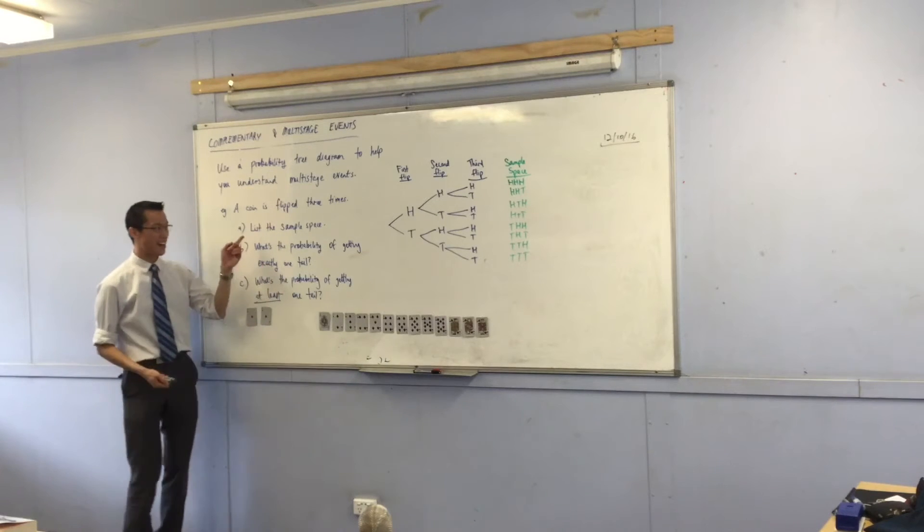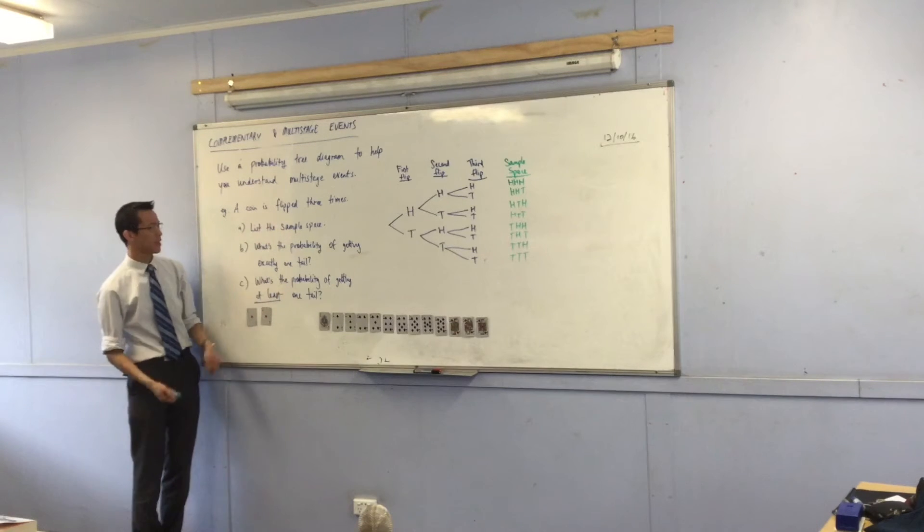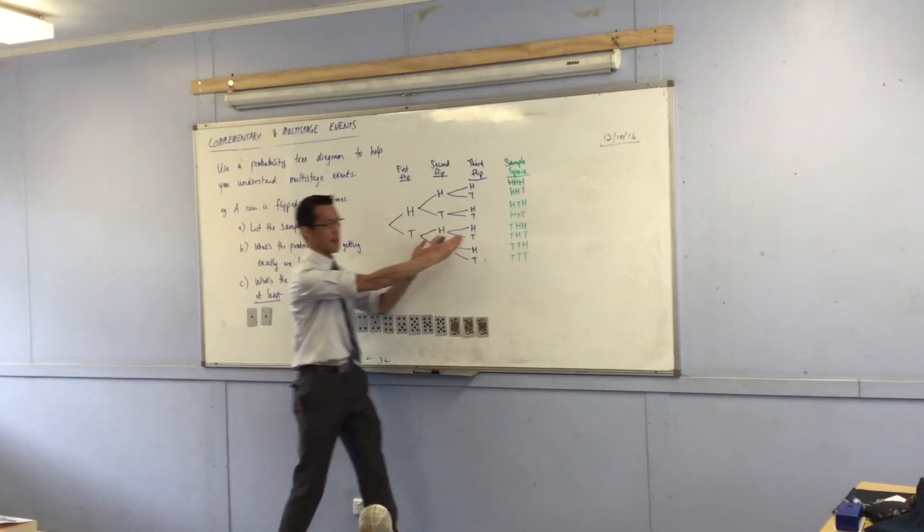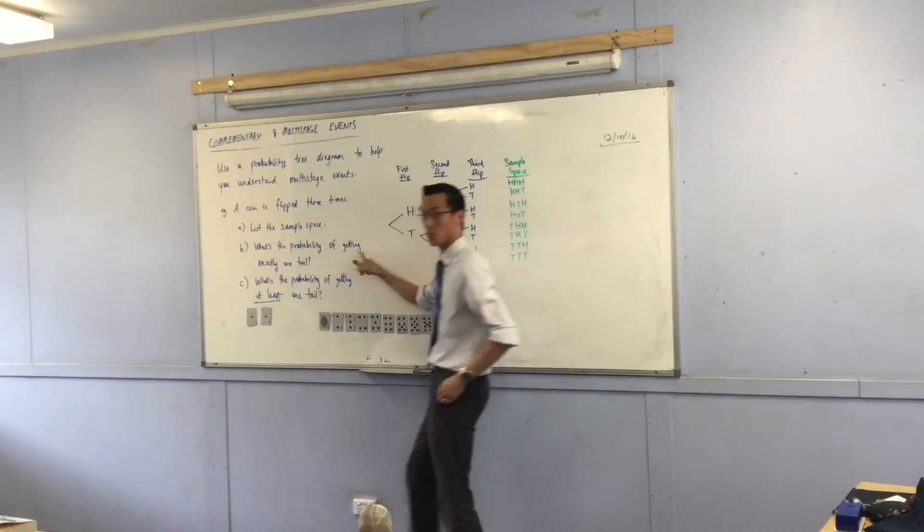So, I've listed out the sample space that are all the outcomes. Now I can use that sample space. You can see I used this to make this, and now I'm going to use this to answer this question.